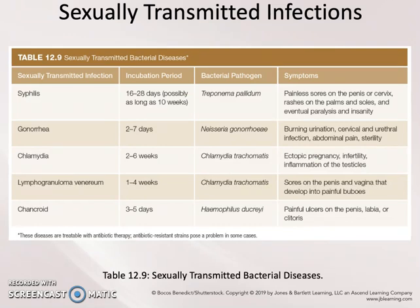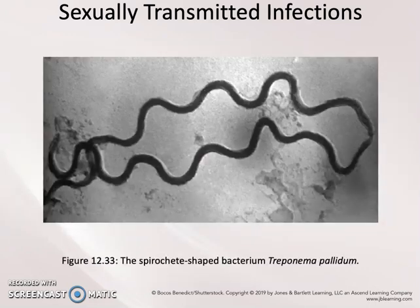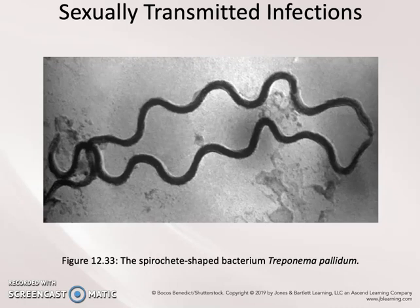A chart listing the different types of STIs caused by bacteria can be found in your book in Table 12.9. The first microbe we're going to talk about is syphilis. Syphilis is caused by the bacterium Treponema pallidum, which has a very unusual structure — it is a spirochete, one of those spiral-shaped bacteria. Syphilis is transmitted primarily through sexual contact and, once acquired, progresses through a series of three stages: primary, secondary, and tertiary.